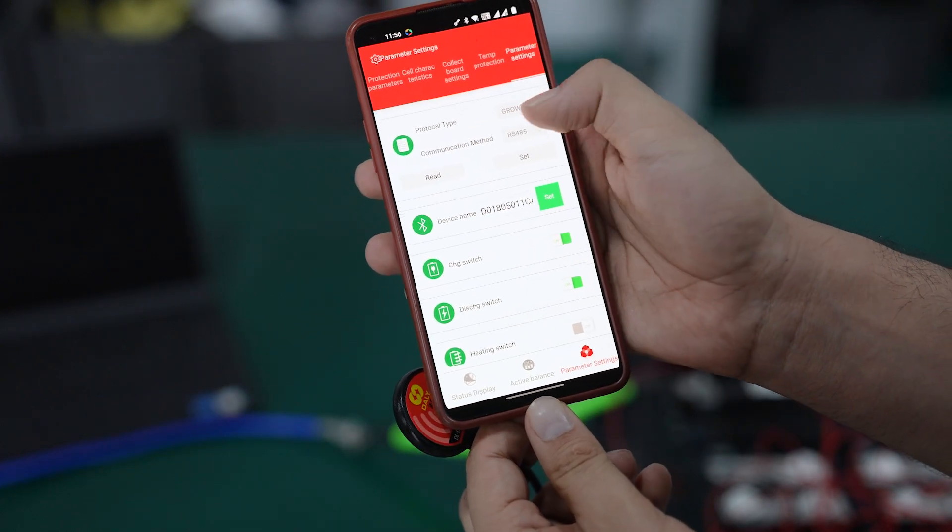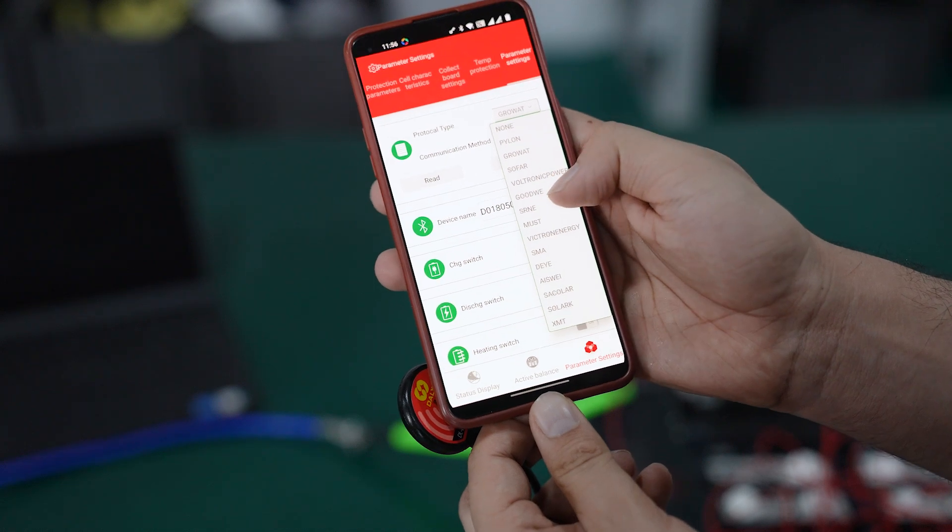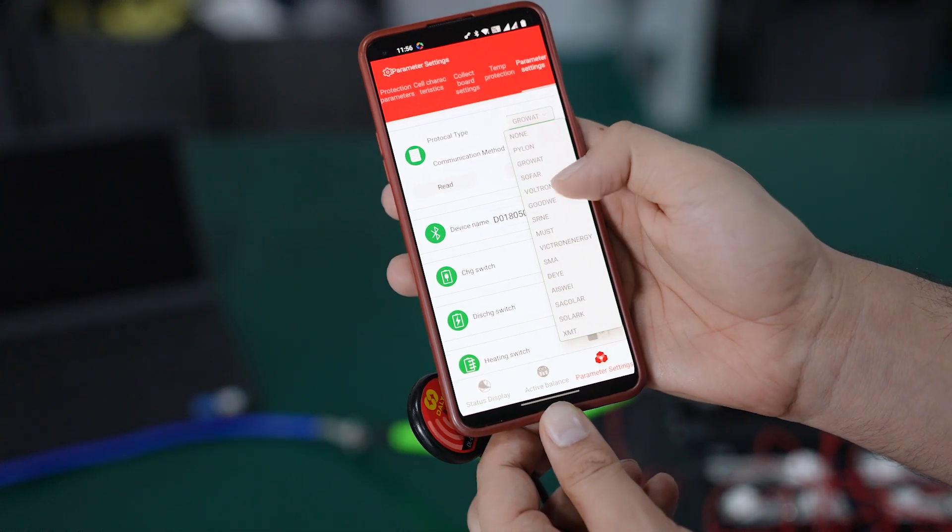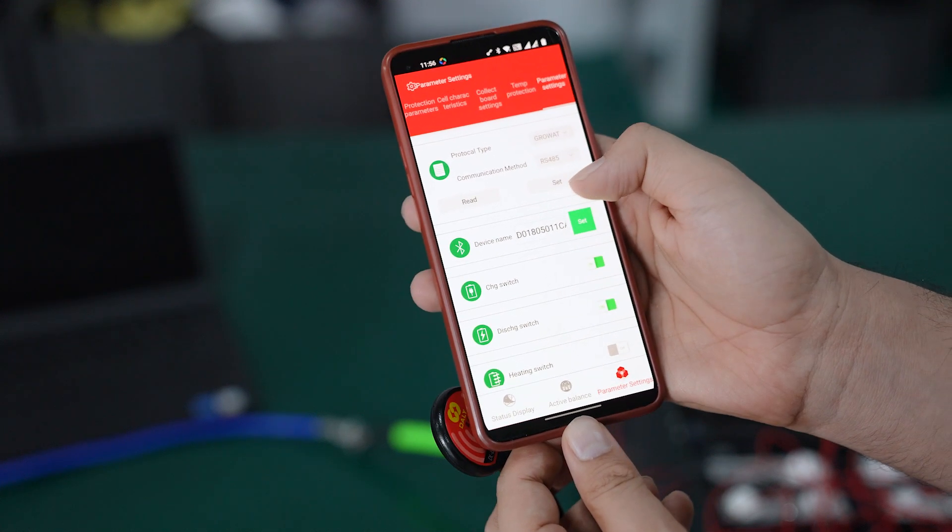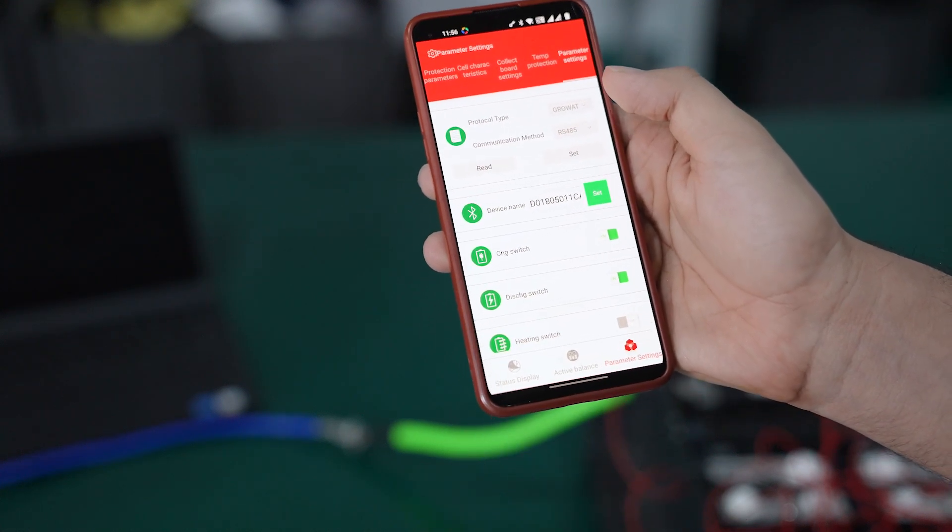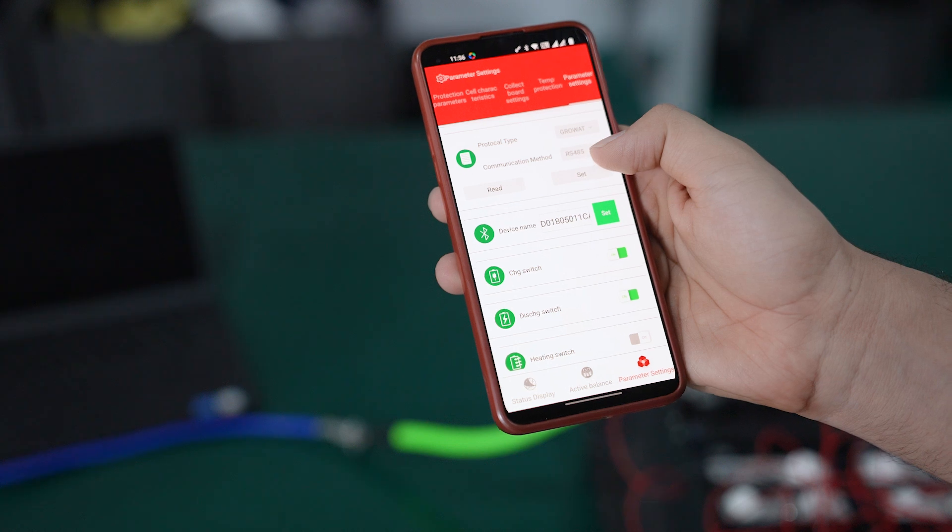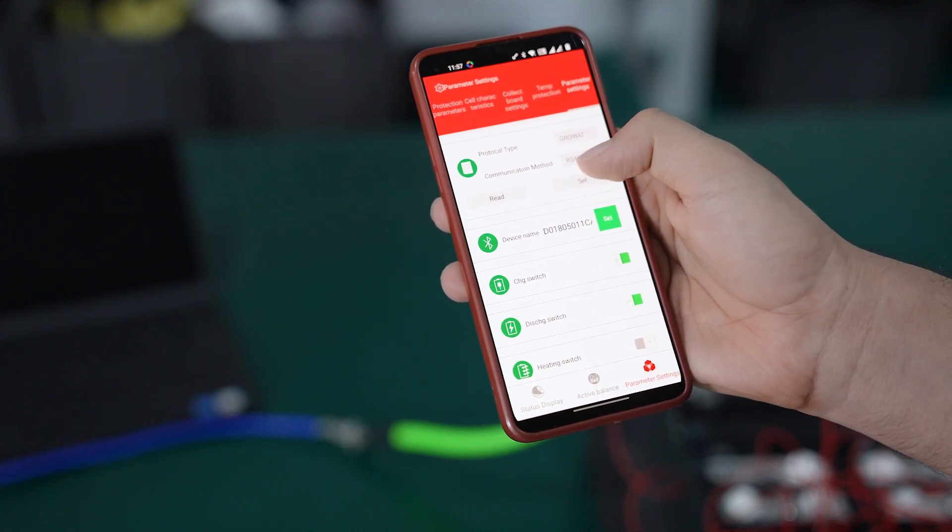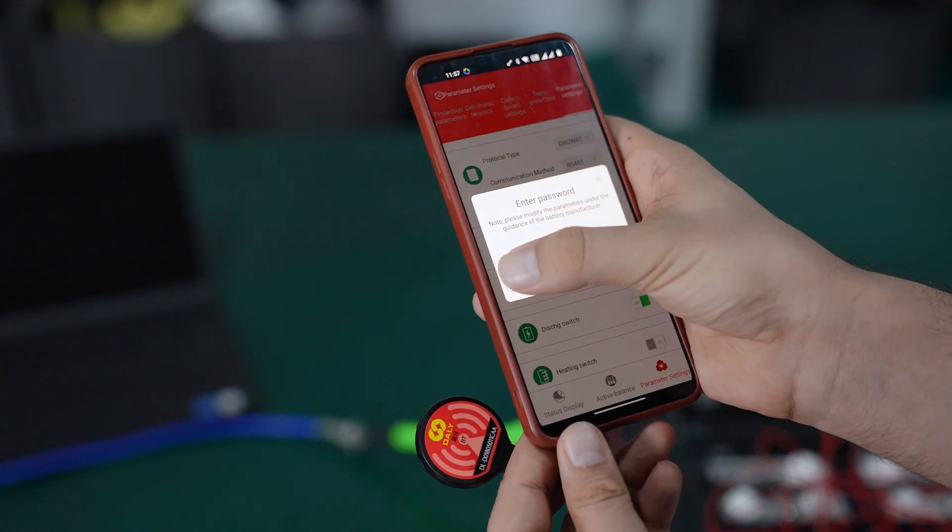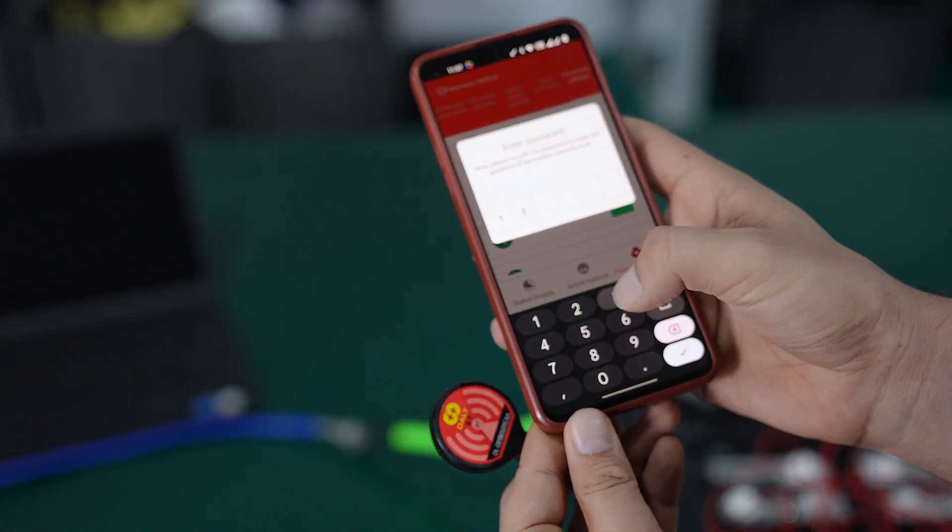There's a protocol type where you can select any inverter brand. You can see there are a lot of inverter brands like Victron, Goodwe, and you can select Growatt here. Whatever communication method you are using—today we are using RS485—select RS485 and set. Enter the password: 1-2-3-4-5-6. It's successfully set.